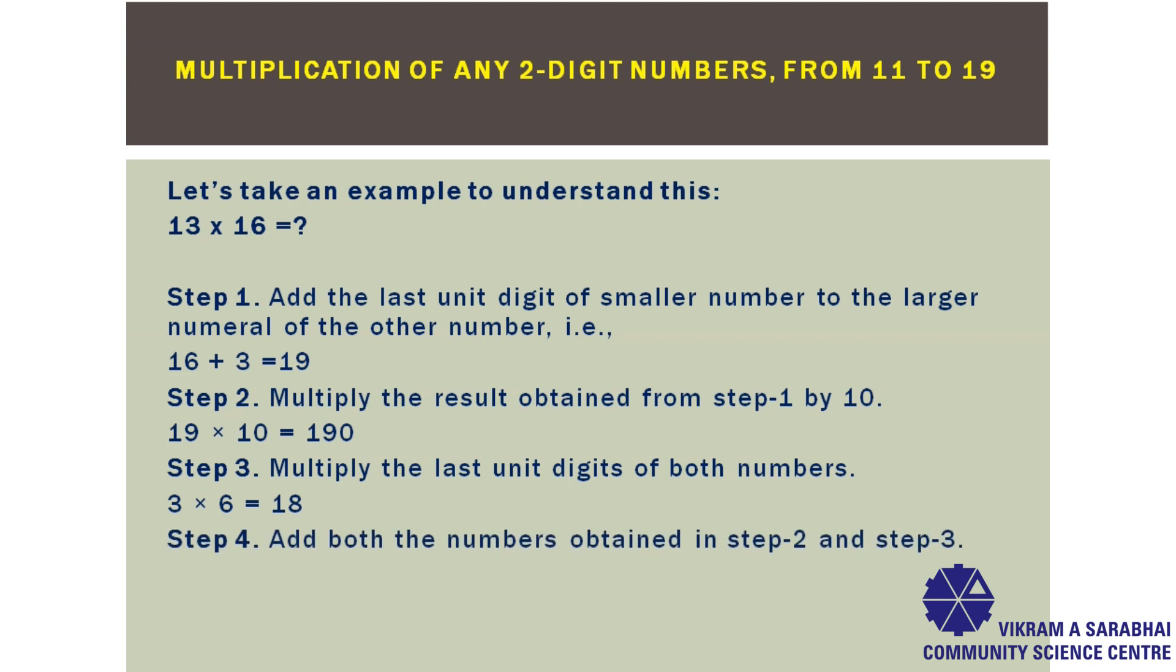In the final step, add both the numbers obtained in step 2 and step 3. That is, from step 2, 190 and from step 3, 18. So, 190 plus 18, we get 208. So, the answer will be 208.